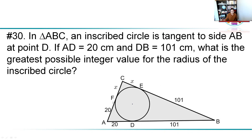We notice a few segment lengths are already placed here, and there's a reason for this. From each vertex, the two tangent segments to the circle have the same length. From vertex A, both tangents are 20, so AD = AF = 20. From vertex B, both tangents are 101, so BD = BE = 101. From vertex C, the two tangents CE and CF are equal — that's the unknown we're searching for.